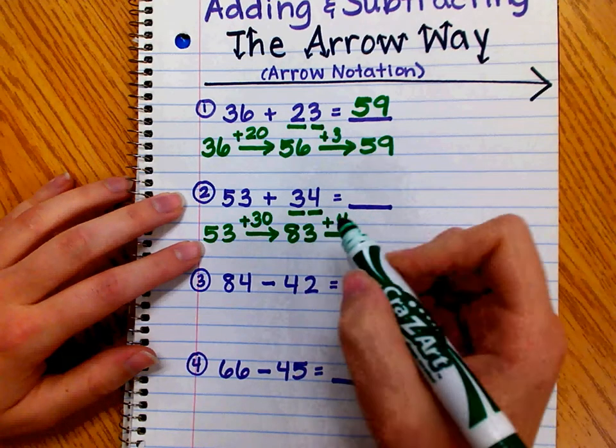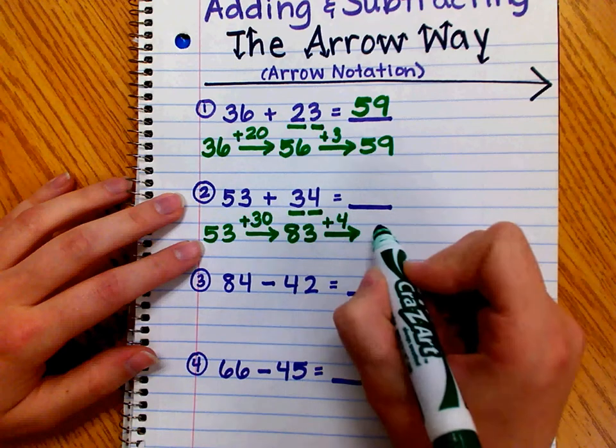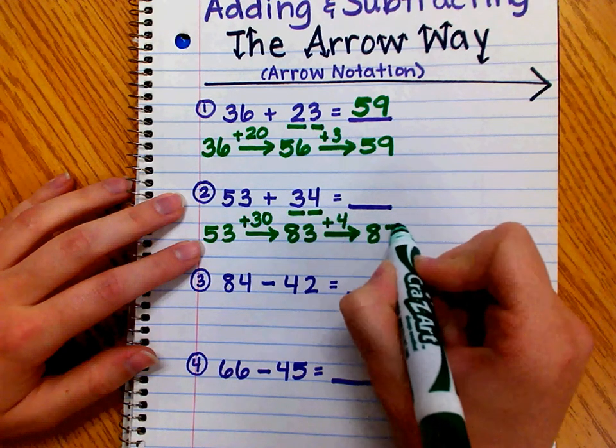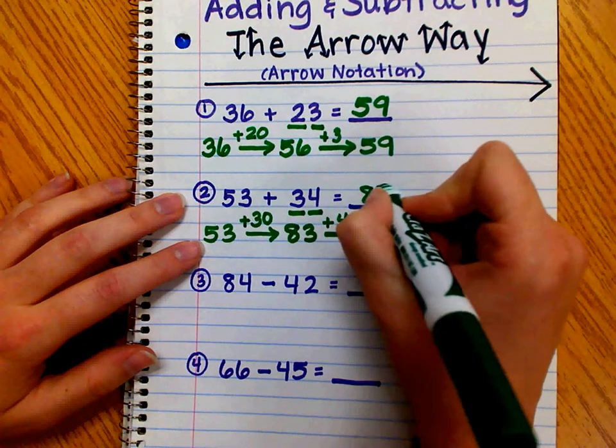They should know, just by using their place value knowledge, that 3 ones plus 4 ones is equal to 7 ones. So, we have 8 tens and 7 ones. So, 53 plus 34 equals 87.